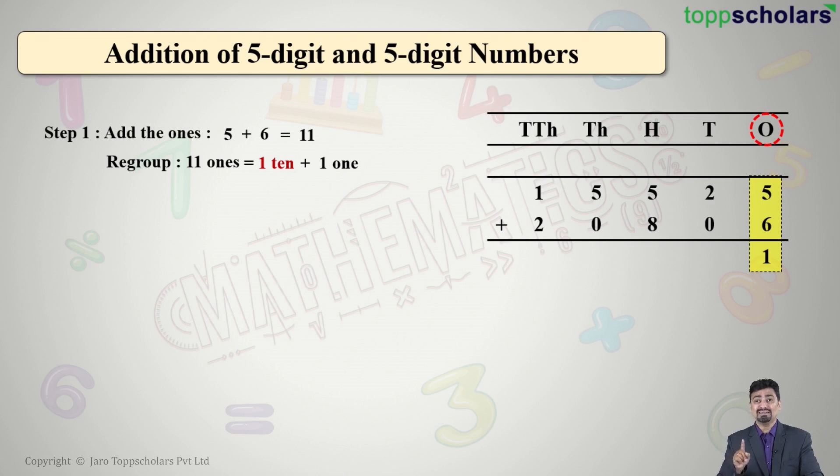In the tens column, we have 1 which is carried forward, which will be added with 2 and 0. What is the answer? 1 + 2 + 0 = 3. There is no carry forward in the tens, so we'll move on to the hundreds column.